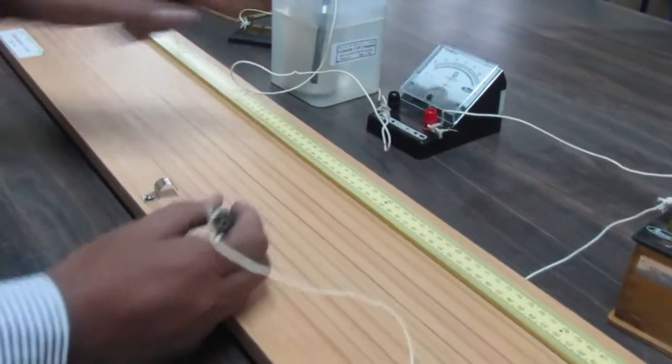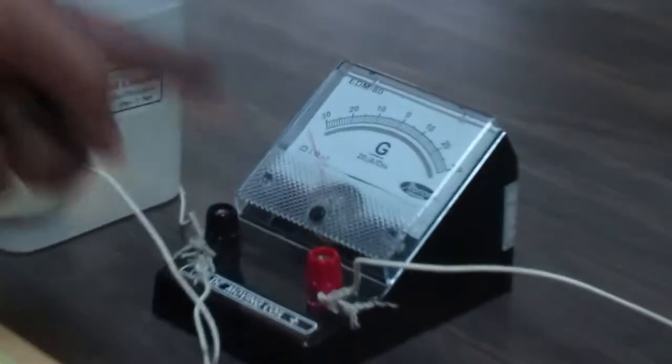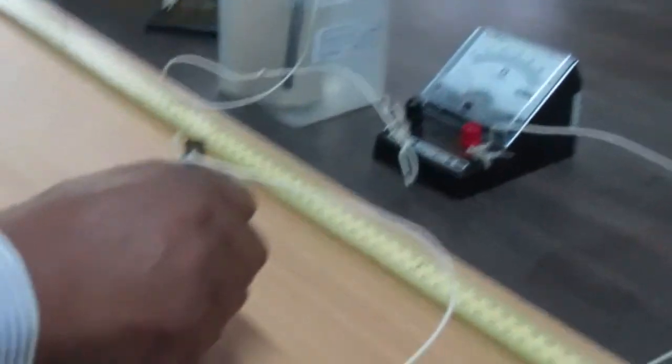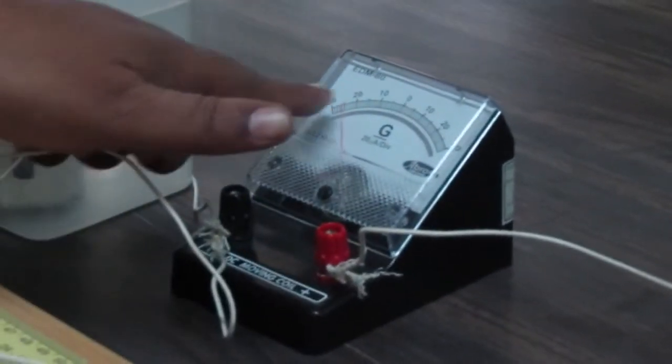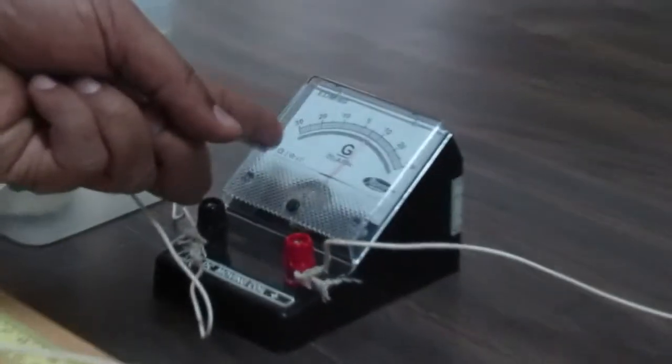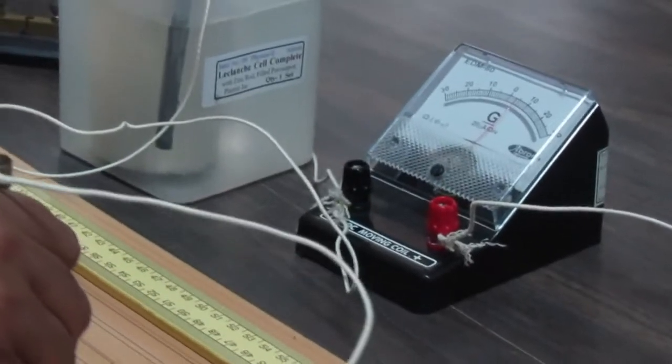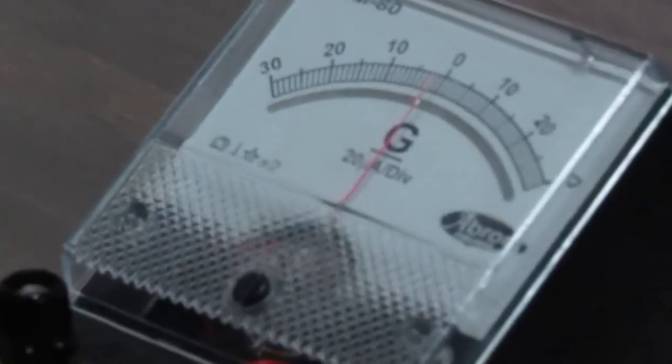For example, if I touch here, the deflection is on the right side. I have to place this jockey in such a way that the galvanometer's deflection will be zero. Now I see the deflection is in the opposite direction. I will try to move the jockey so that the galvanometer's needle moves. As the needle comes to zero, you stop the jockey.